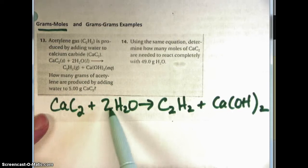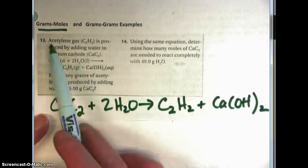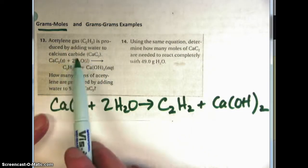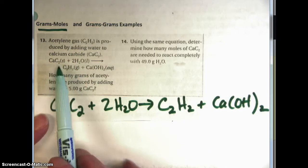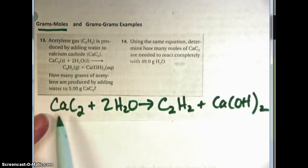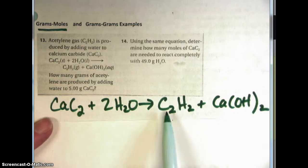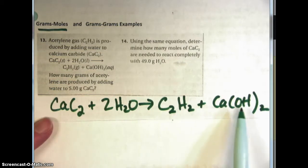acetylene gas, C2H2, is produced by adding water to calcium carbide. In the following equation, one mole of calcium carbide and two moles of water yields one mole of acetylene gas and one mole of calcium hydroxide.